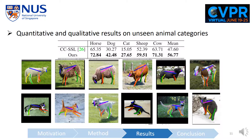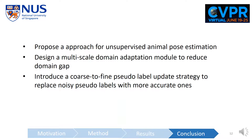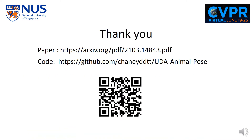We also apply our model to unseen animal categories. Note that we train our model on horse and tiger, and test it on dog, cat, sheep, and cow. Our model generalizes well to these unseen categories. In conclusion, we propose an approach for unsupervised animal pose estimation, design a multi-scale domain adaptation module to reduce the domain gap between synthetic and real data, and introduce a coarse-to-fine pseudo label update strategy to replace noisy pseudo labels with more accurate ones. Thank you for listening — for more details, please refer to our paper and code.